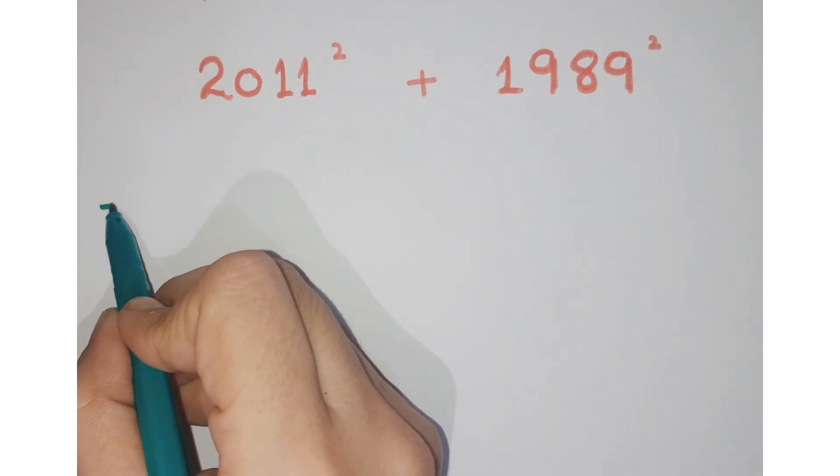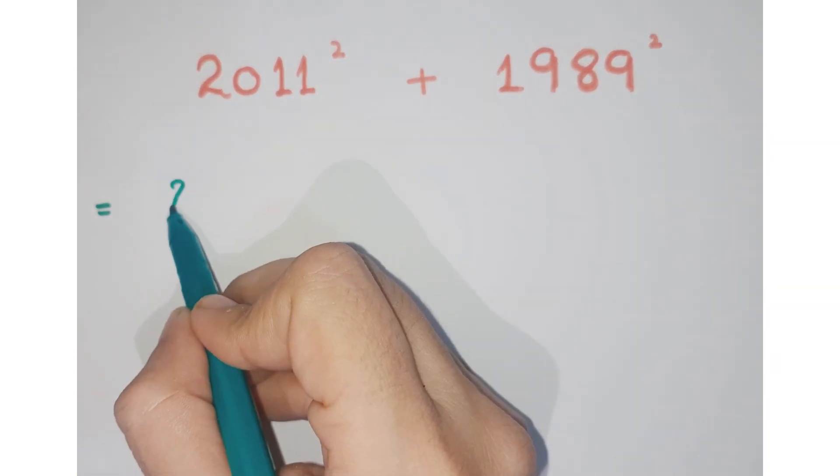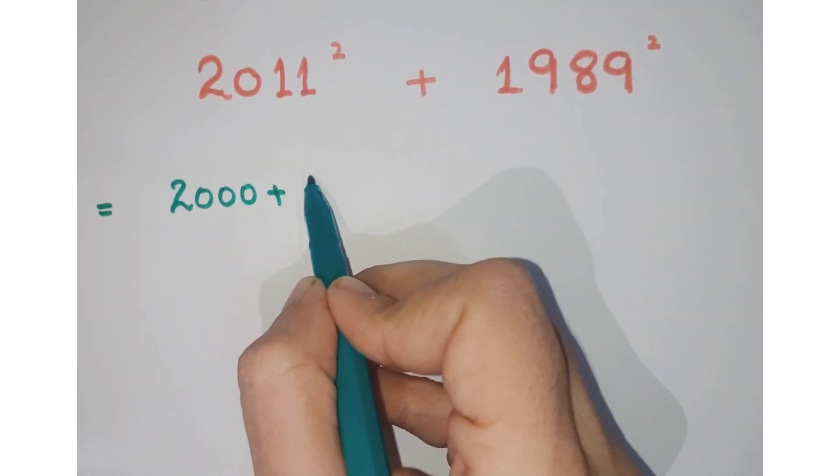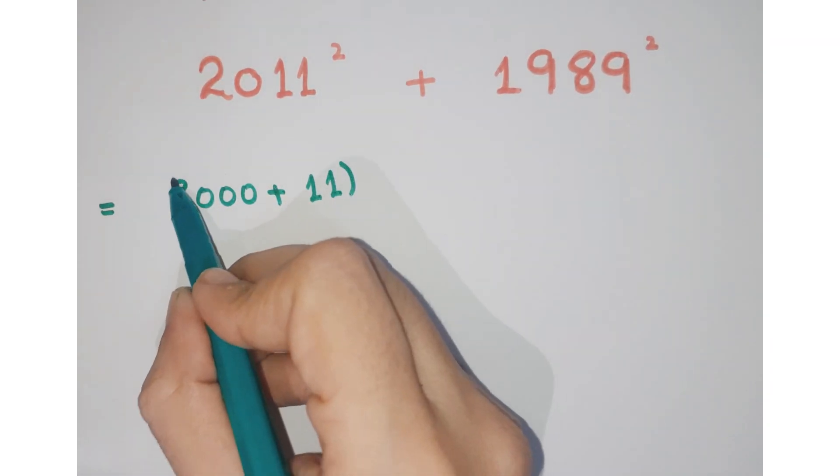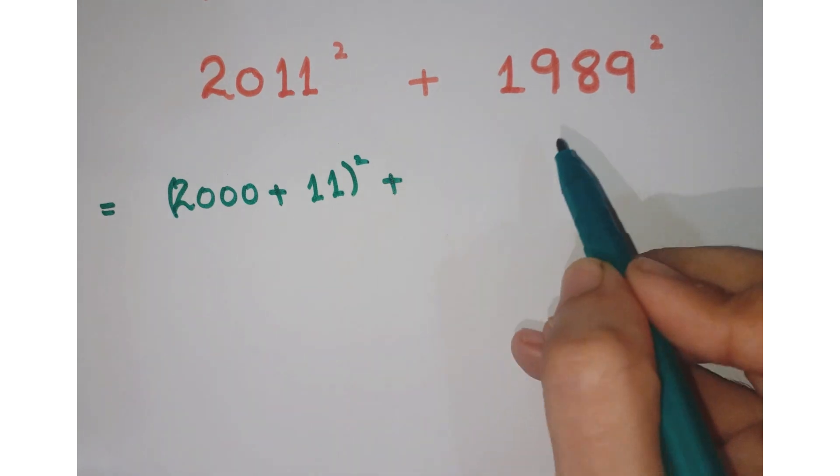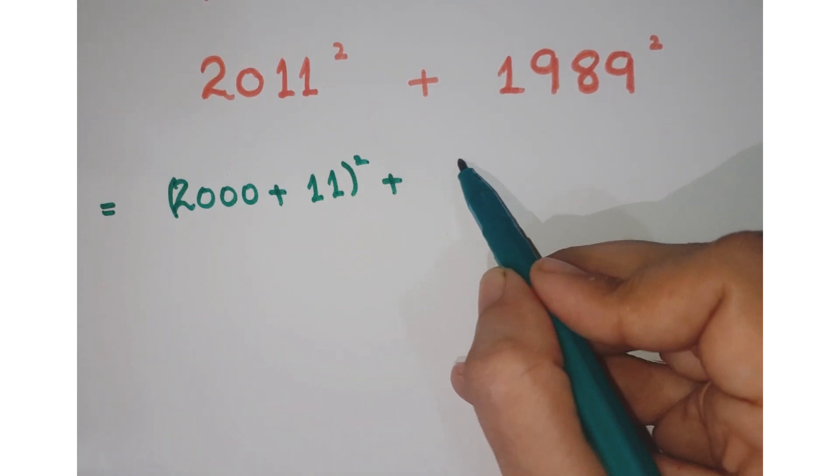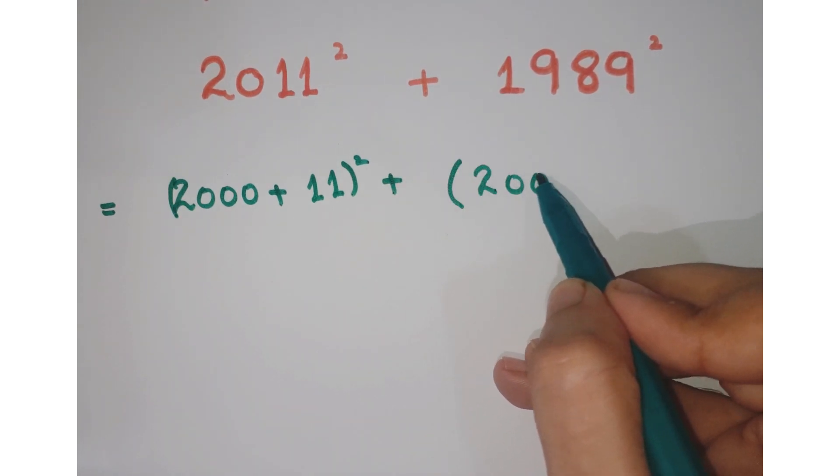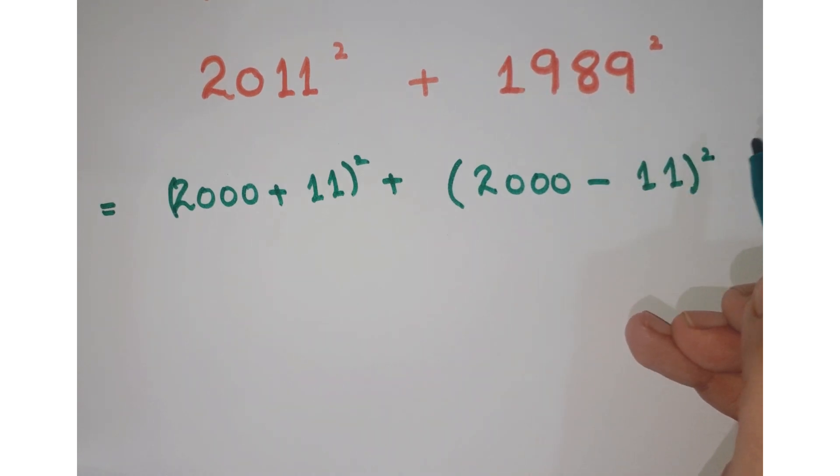So what we are going to do, just we are going to break up 2011 into 2000 plus 11 whole square and similarly this 1989 can be written as 2000 minus 11 whole square.